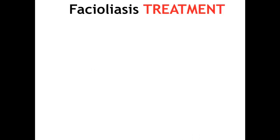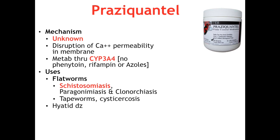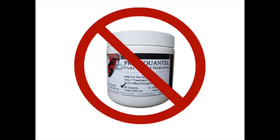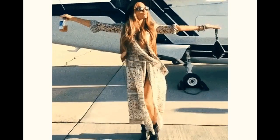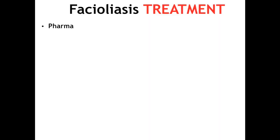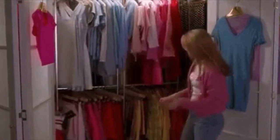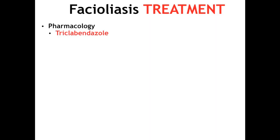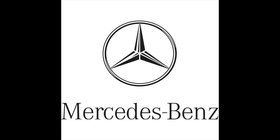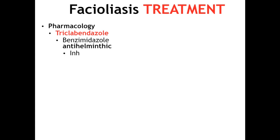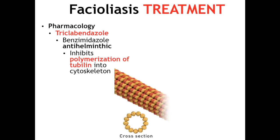For treatment of fascioliasis: normally for flukes we use praziquantel, an antihelminthic whose mechanism is unknown. However, praziquantel is ineffective for fascioliasis — she must have some inherent resistance to the drug. The drug of choice is triclabendazole, which works at the level of microtubules inhibiting tubulin. The mnemonic: the fashionista won't wear just anything — she must 'try clothes on' — triclabendazole. This special treatment is the major point to remember for the Fasciolas.